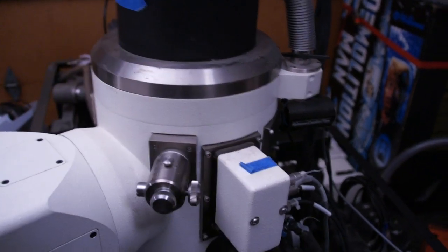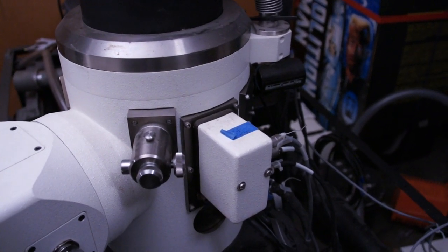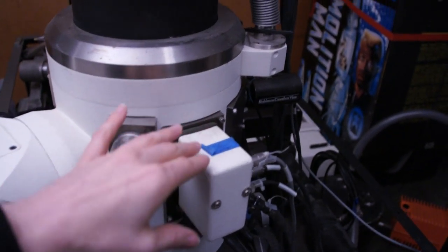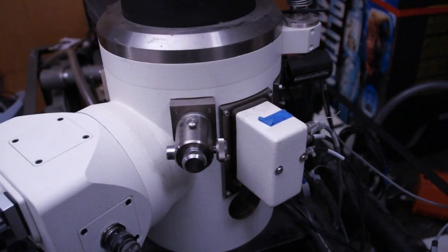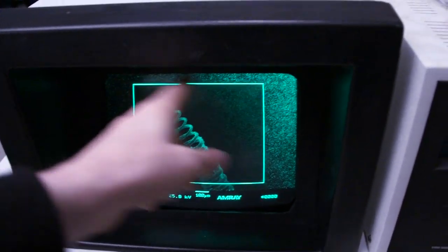This is one of the detectors. I have a couple others that aren't installed on it right now. This particular detector uses a scintillator, which when the electron strikes it, it gives off a little glint of light, and then behind the scintillator is a photomultiplier that multiplies that signal up to a point where the console can determine if it's a bright or dark spot, and it'll draw the pixels on the screen.